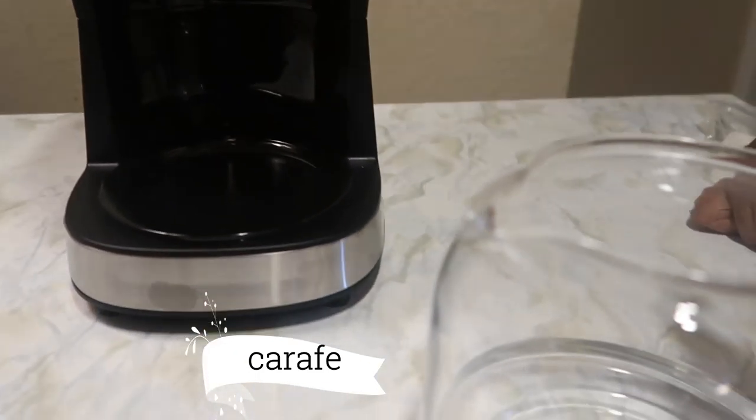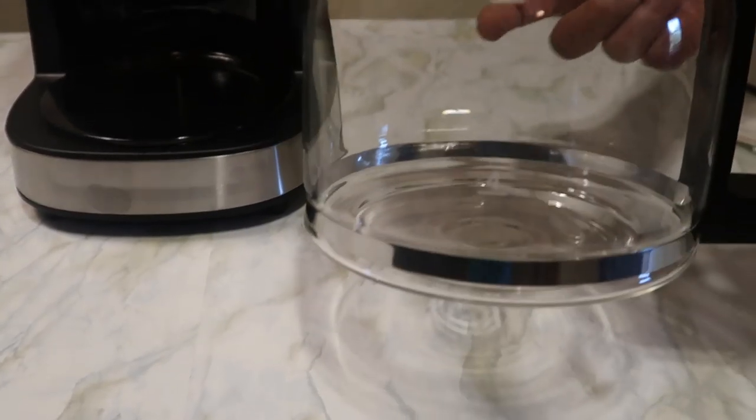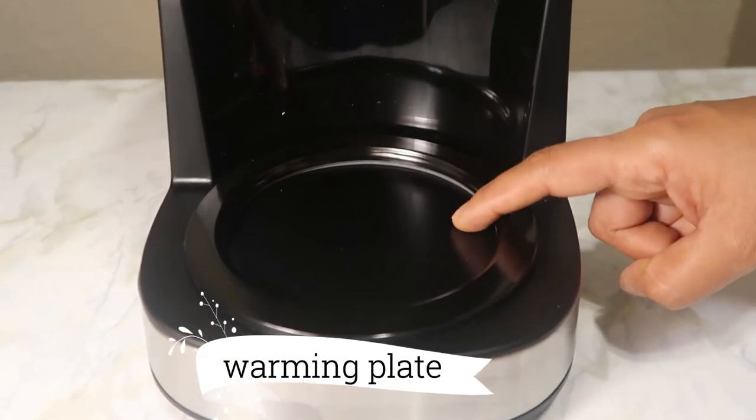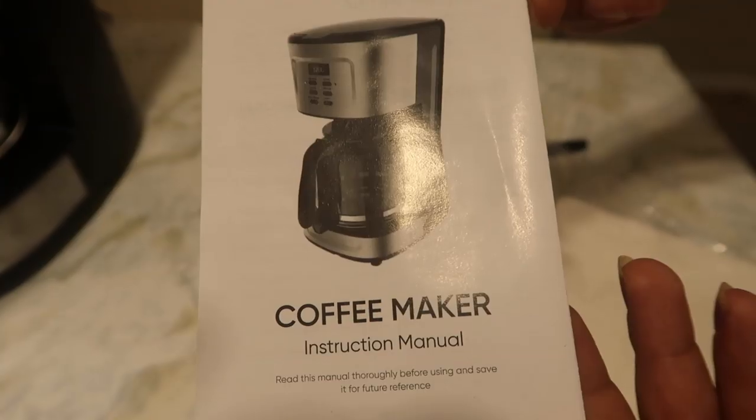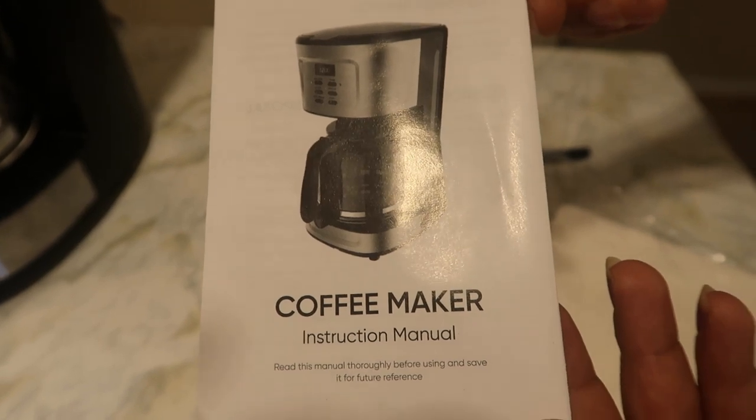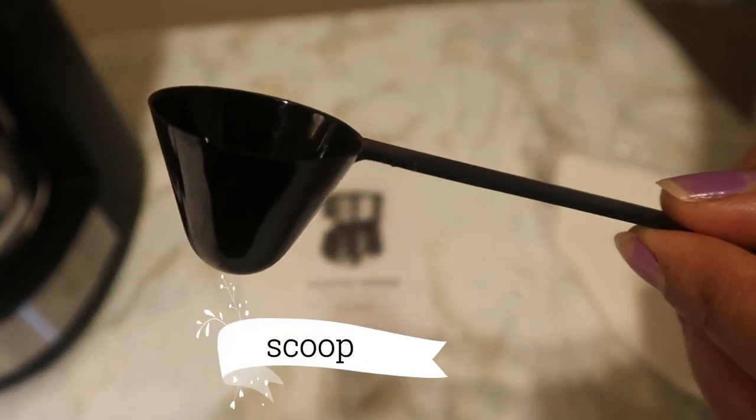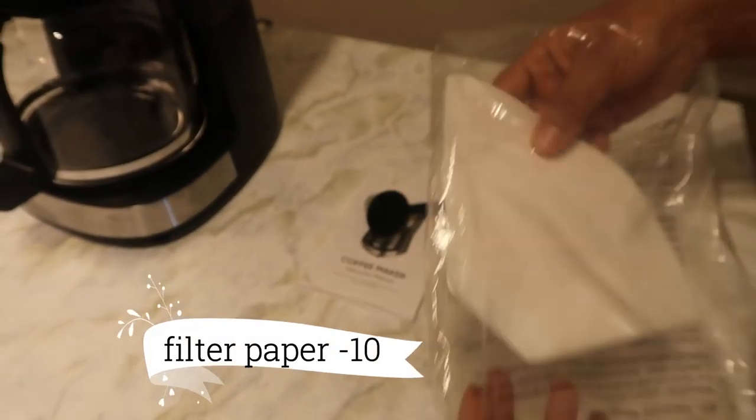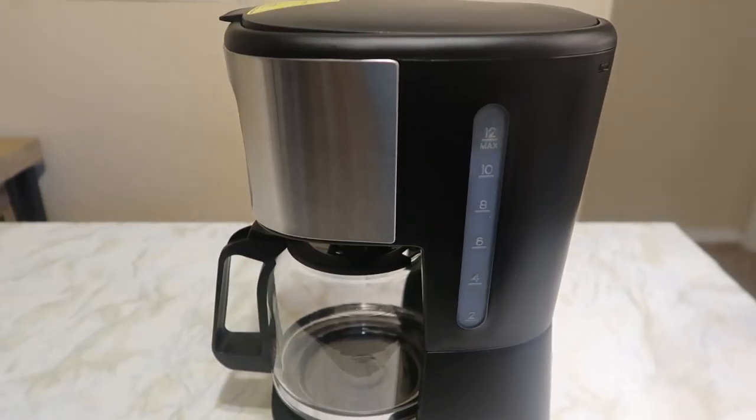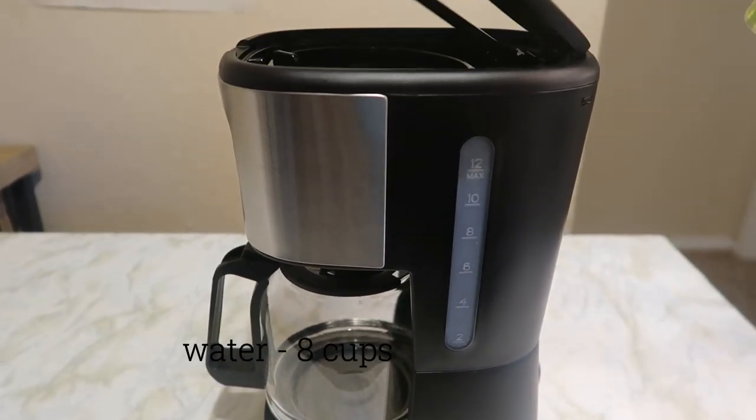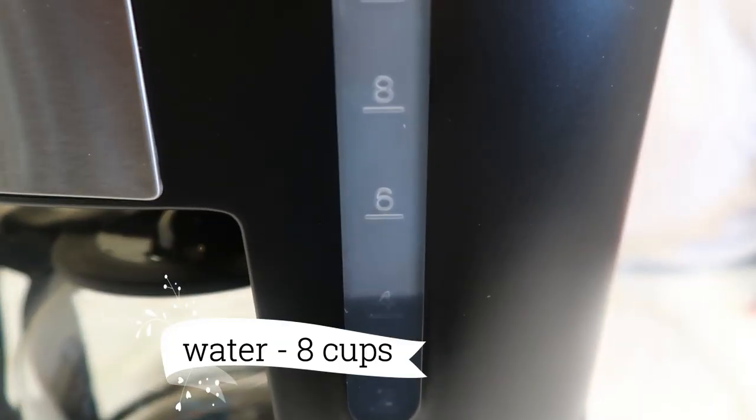handle and lid. The carafe can be washed in the dishwasher. This is the warming plate. A few accessories are included: user manual, one scoop, and 10 filter papers. Now let's prepare delicious coffee. Adding water into the water tank. Here I